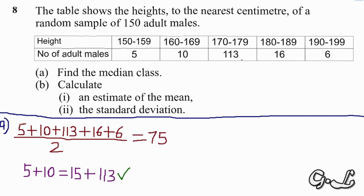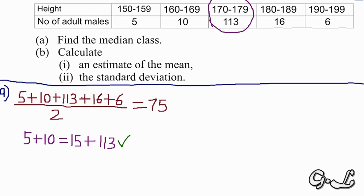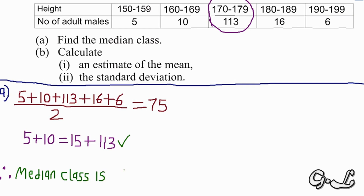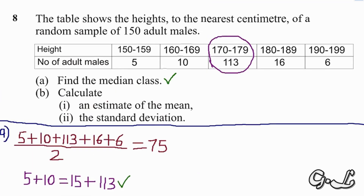The 75 can be found when we add 15 plus 113. The 113 is found in the height class 170 to 179. So the median class is 170 to 179. That is how you're supposed to score marks in an exam. We are now done with Part A.